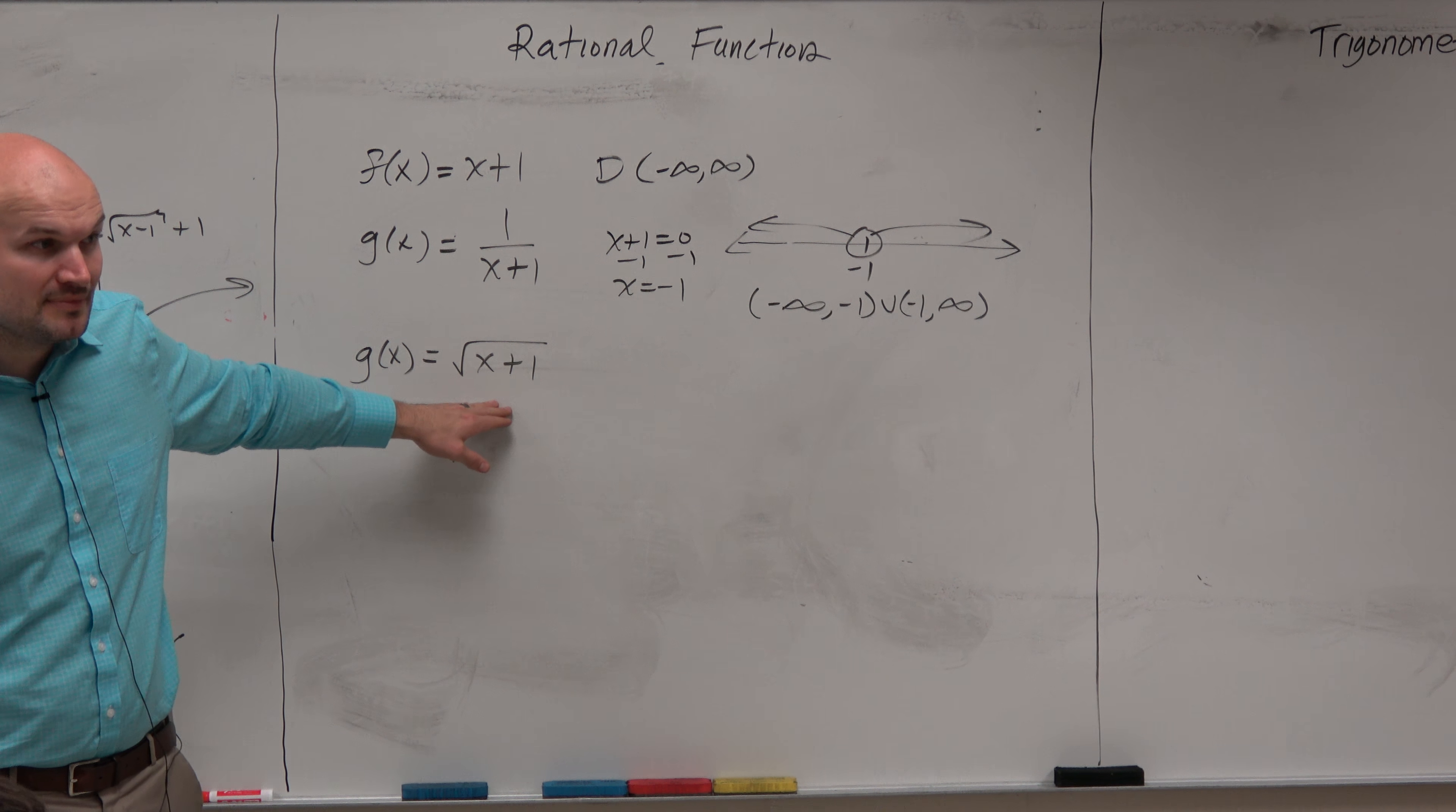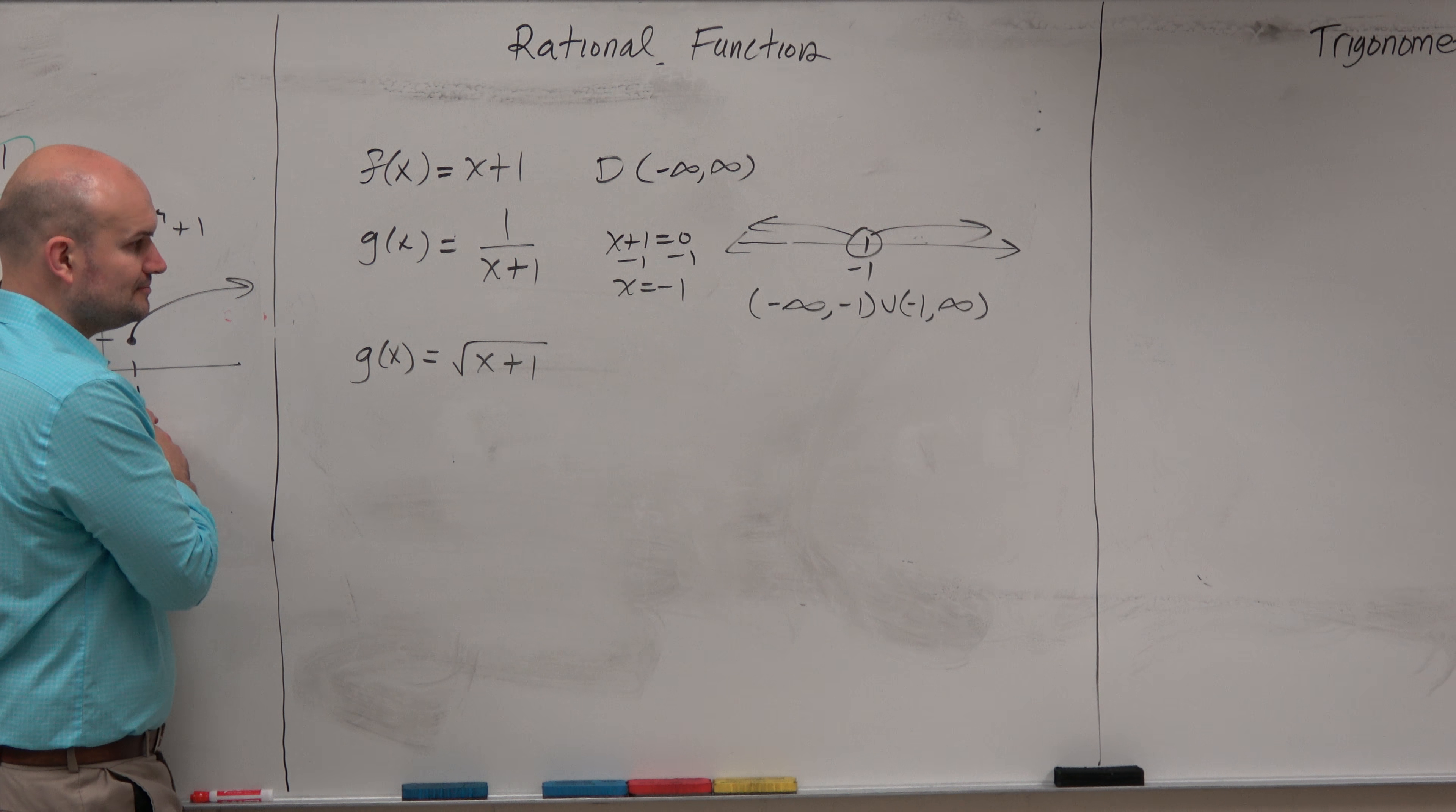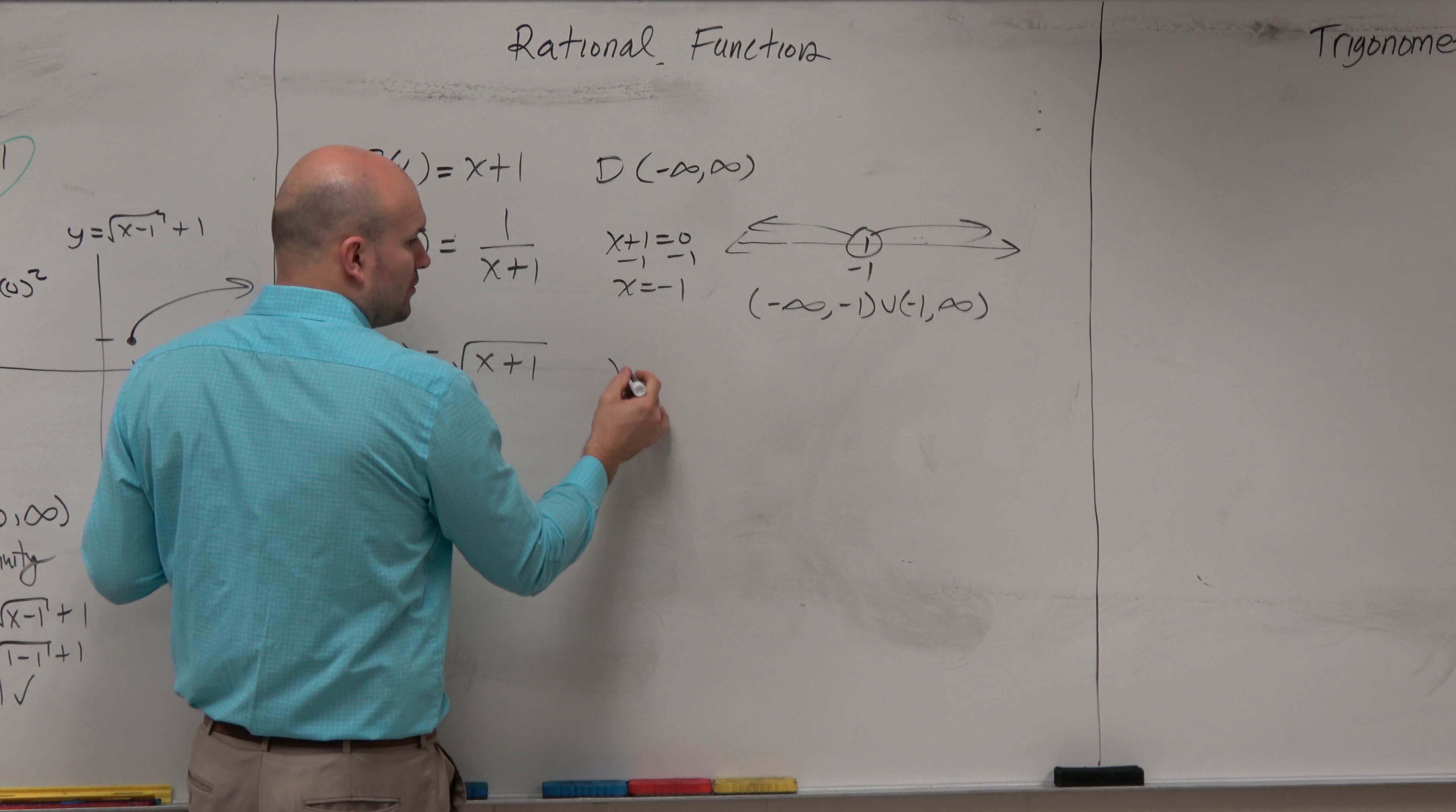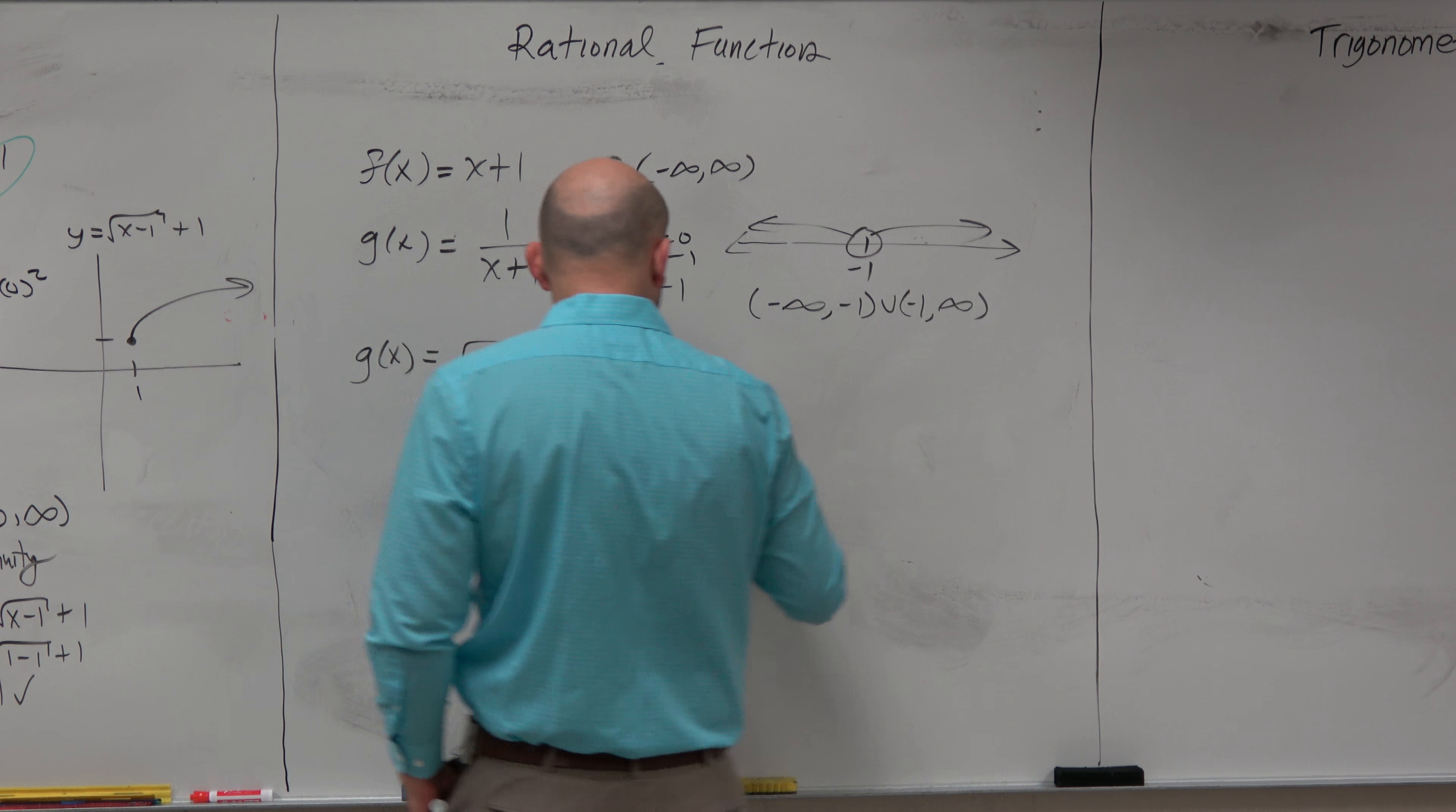So we realize the values that make my radicand negative are not going to be within my domain of real numbers, correct? So then I've got to figure out, well, what numbers then make the radicand, the expression under the radical, negative? And we look at this and we say, well, that's going to be all the numbers that are going to be greater than negative 1. So all I told you guys to do here, no matter how complicated your expression was, was just set your radicand greater and equal to 0.